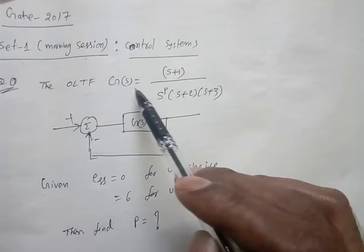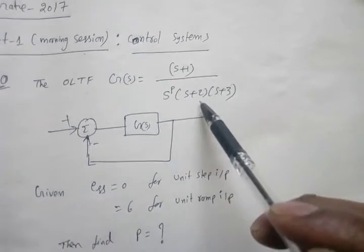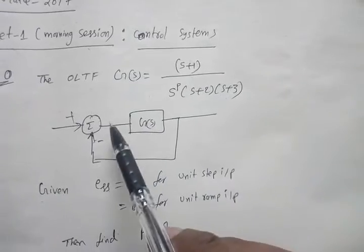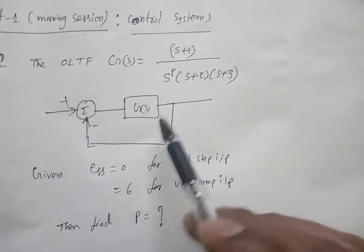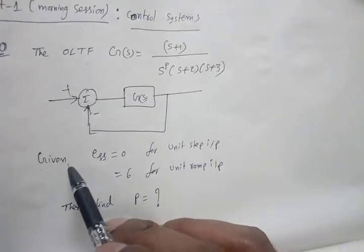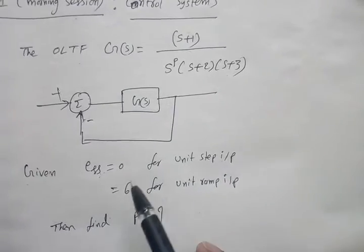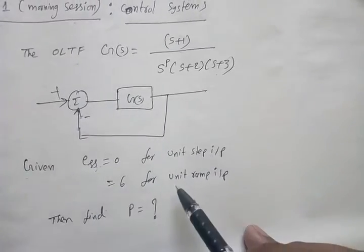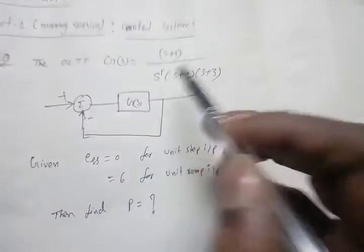The open loop transfer function G of S is equal to S plus 1 by S to the power P into S plus 2 into S plus 3. The block diagram is shown like this. For the given, steady state error is equal to 0 for unit step input and steady state error is equal to 6 for unit ramp input. Then find the parameter P.